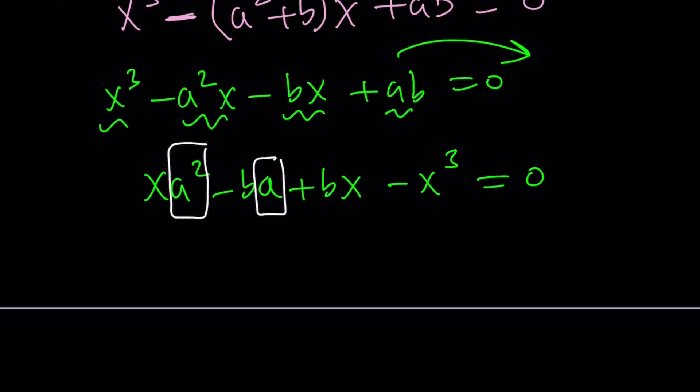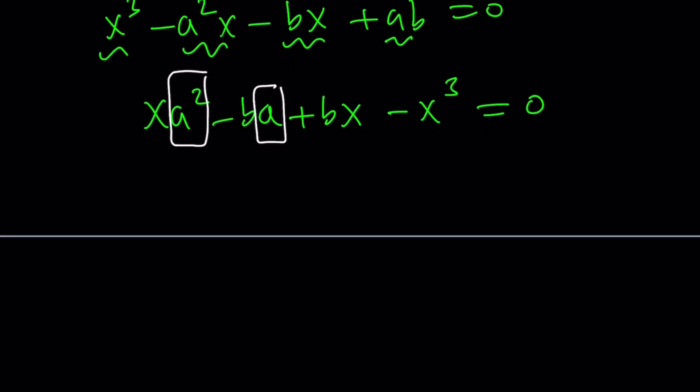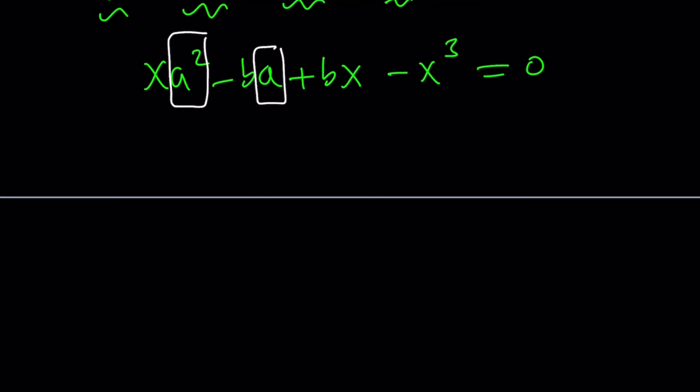So we can solve it. And we're going to treat x as a constant. Because if this is quadratic in a, then x is a constant. And of course, b is a constant too. Right? So let's solve it using the quadratic formula. What does the quadratic formula say?